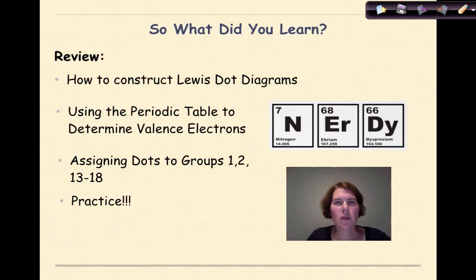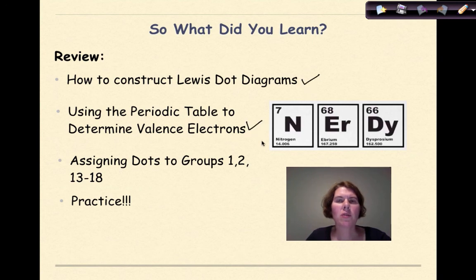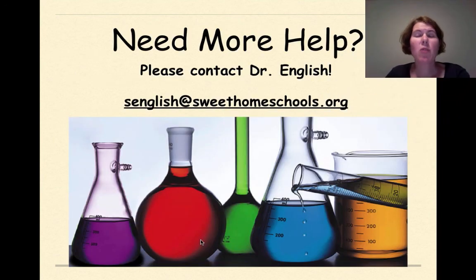In this tutorial we talked about how to construct Lewis dot diagrams, used the periodic table to determine valence electrons, and assigned dots to groups 1 and 2, and 13 through 18. Then at the end we did a little bit of practice. Need more help? Feel free to contact me. Have a great day.